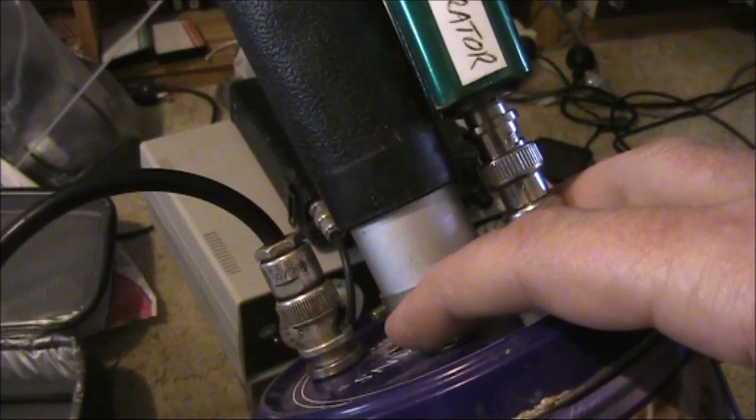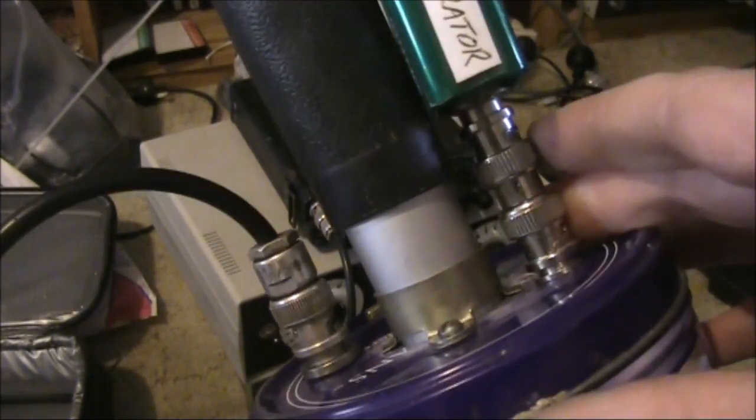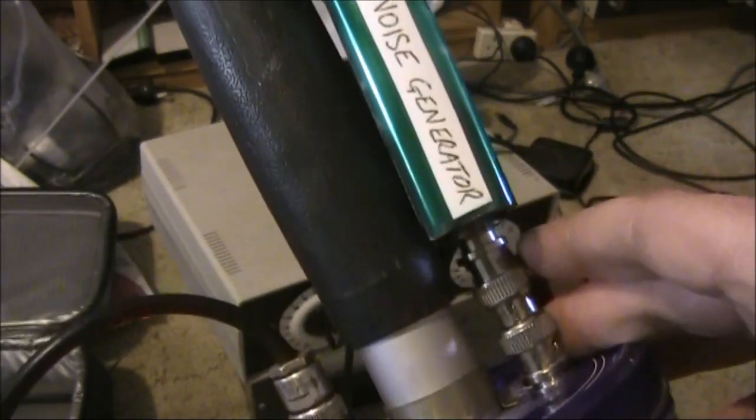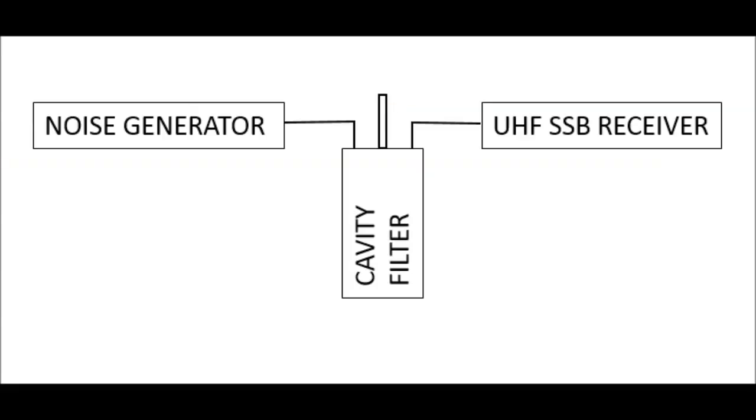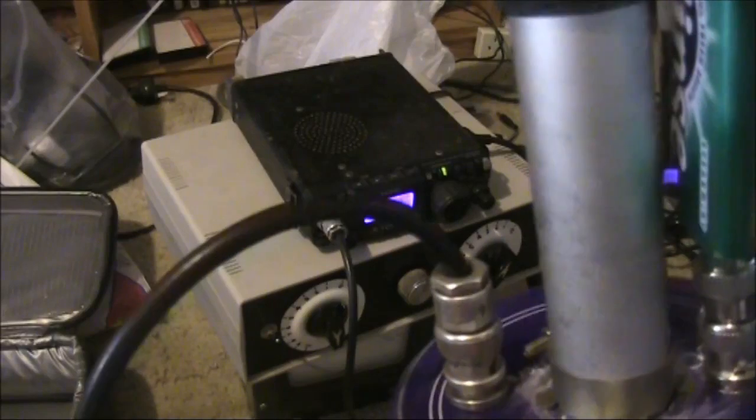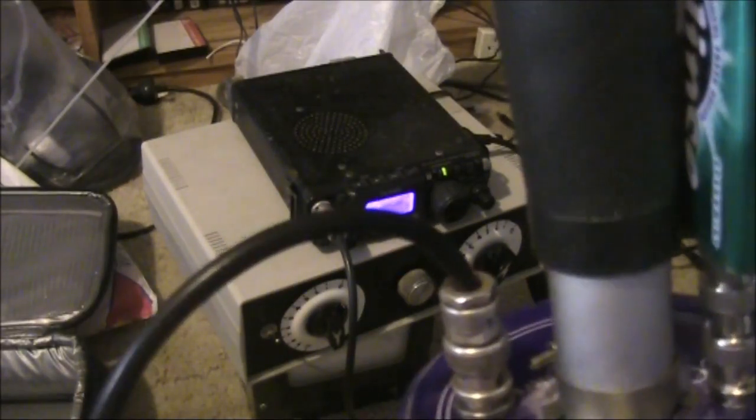I've got one coupling loop connected to the receiver and the other to the output of this RF noise generator. When I slide in and out, there should be a noise peak.